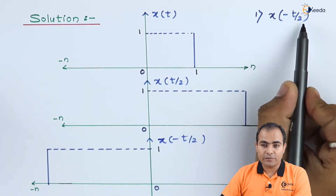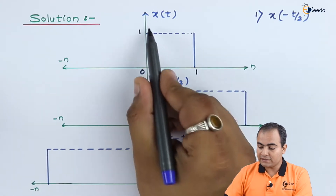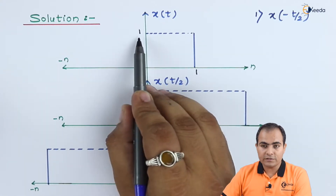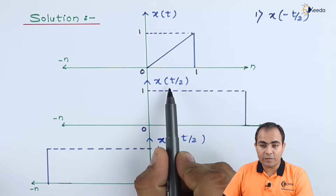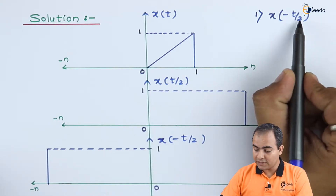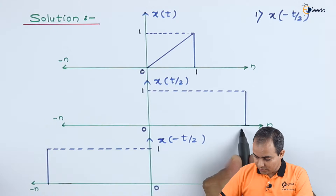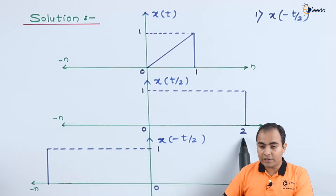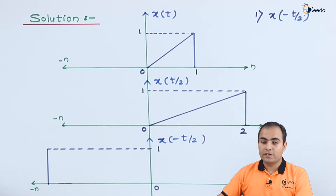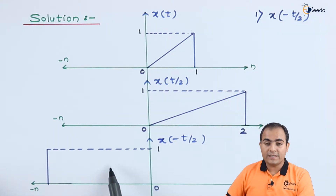Since t is divided by 2, we will multiply each and every time instance by 2. x of t is simply a slope available between 0 to 1 with amplitude 1. After applying time scaling property, the graph starts from 0, but since the time is divided by 2, this 2 is multiplied with each time instance. So 0 times 2 is 0, but 1 times 2 is 2. The graph will start from 0 but terminate at 2, and the slope will be decreased. Next, the minus sign means we are going to use time reversal property.